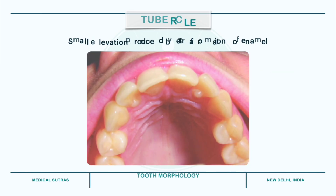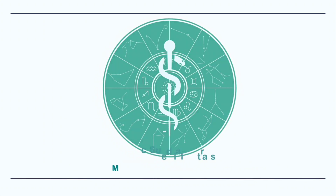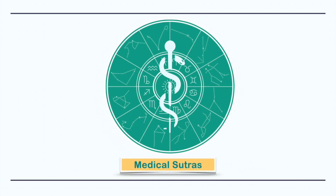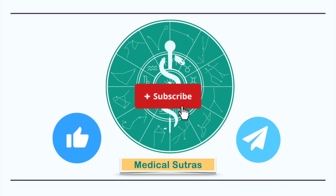So that was all about tooth morphology. In these two videos, we discussed extensively about parts and divisions of teeth, surfaces, line angles and point angles, and the different landmarks and features found on the tooth surface. In the upcoming video, we will continue with our series on dental anatomy. Till then, if you found the video helpful and informative, please like the video, share it with your friends and subscribe to the channel for more such content.